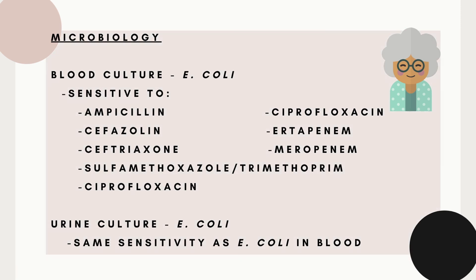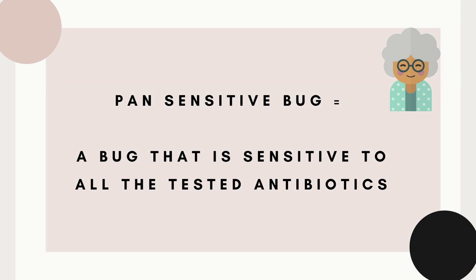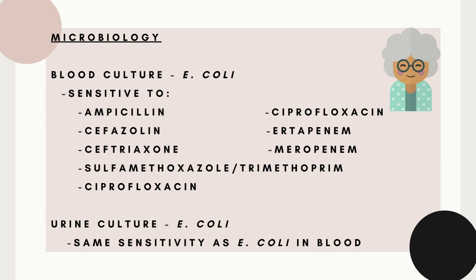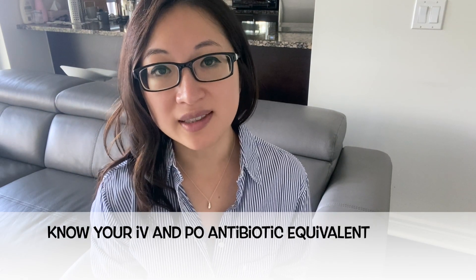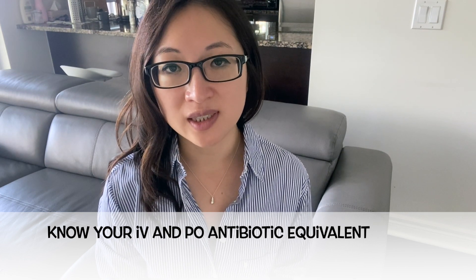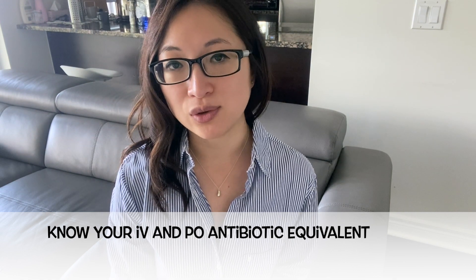Blood and urine cultures collected on admission before antibiotics started both grew E. coli that is considered pan-sensitive — meaning sensitive to all tested antibiotics — including ampicillin, cefazolin, ceftriaxone, Septra, cipro, piperacillin-tazobactam, ertapenem, and meropenem. Once you are familiar with your antibiotics, you will know that ampicillin and cefazolin are both narrower spectrum than ceftriaxone and are potential alternatives to consider. It is also helpful to know the oral equivalents, since sensitivity to the IV version predicts sensitivity to the oral equivalent. The oral equivalent of ampicillin IV is oral amoxicillin, and for cefazolin IV, the oral equivalent would be cefalexin.